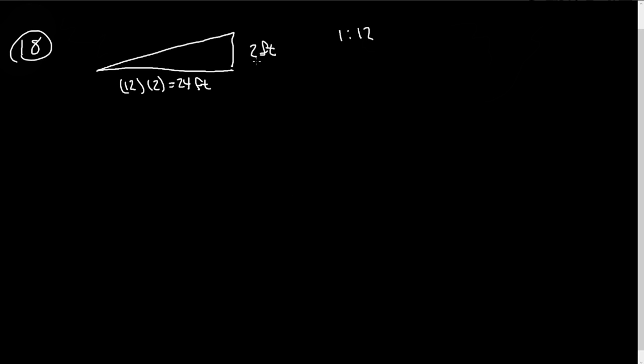Pretty straightforward. So two feet we were given that and we're given a pitch on this that says that if I go up two feet I need to go over 12 times to 24 feet. So that is number 18.